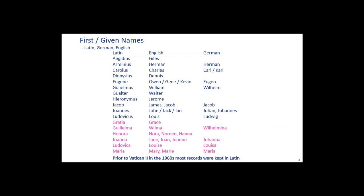When dealing with Latin, sometimes you can figure out the names, but here are some peculiar ones. Aeneas in Gaelic would be Guile. Arminius would be Hermann in English. Carolus or Carl would be Charles in English, or Karl in German. Dionysius would be Dennis. Eugene can be translated as Eugen for German, but the Gaelic form if you're dealing with the Irish would probably be Owen, sometimes Gene, or sometimes Kevin. These are kind of tricky when you see them in Latin — it's not obvious.